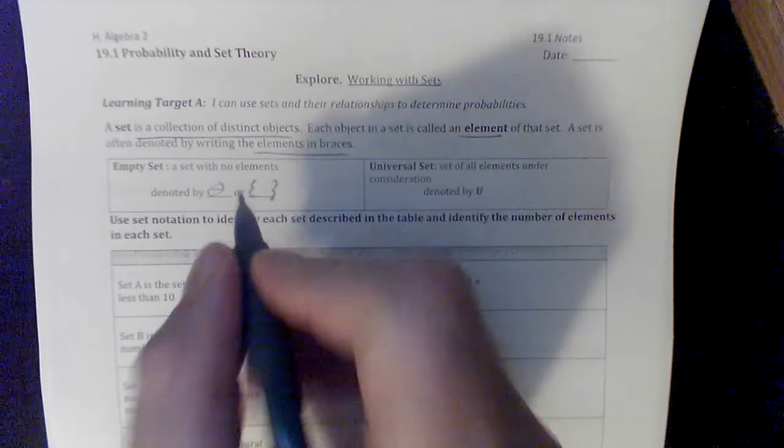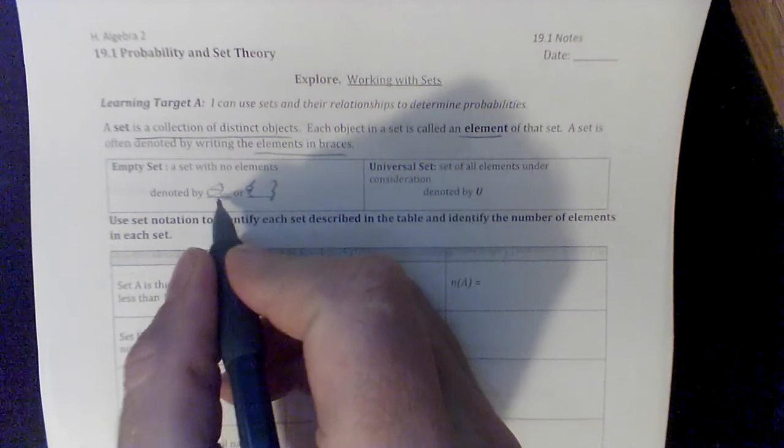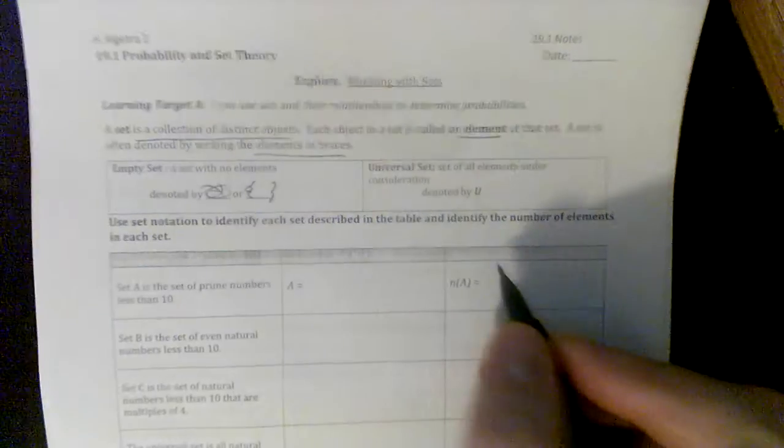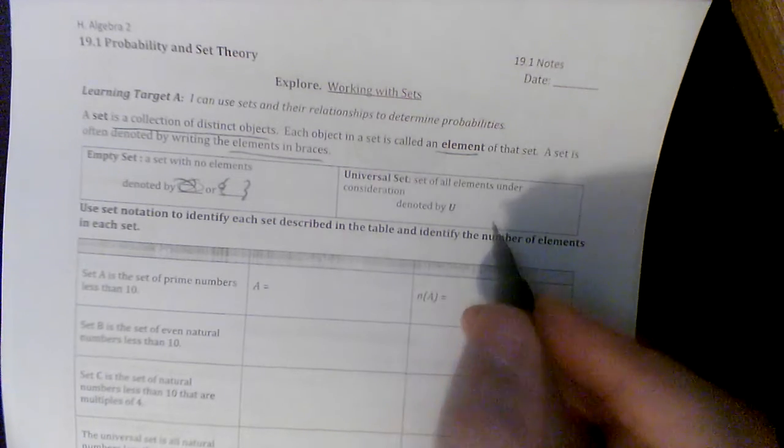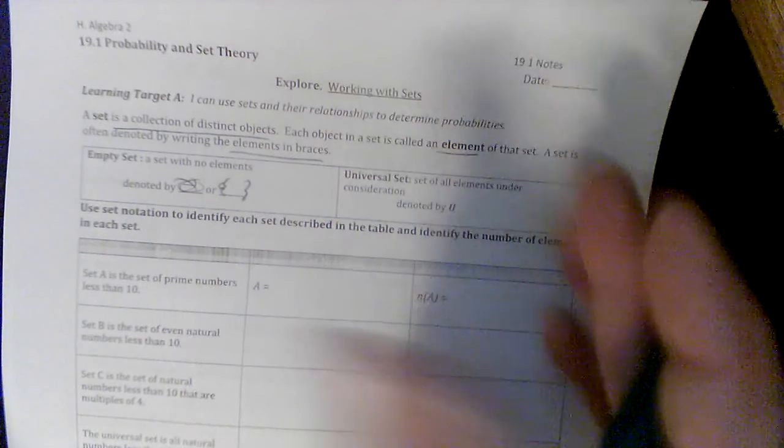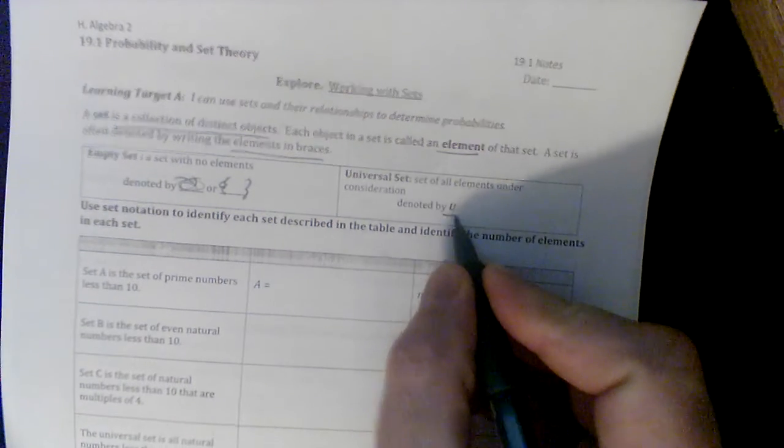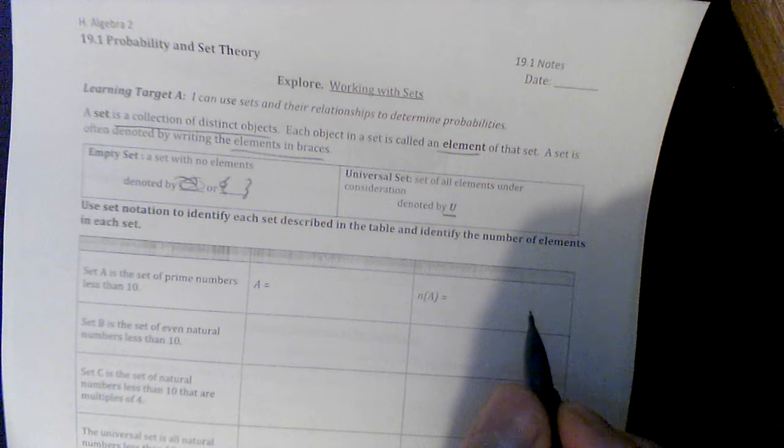You can say an empty set is a set of brackets with nothing in them, or you can just say empty set with a zero crossed through the middle. A universal set is where elements are pulled from for the smaller set. Very often you'll just see it denoted by a U right there.